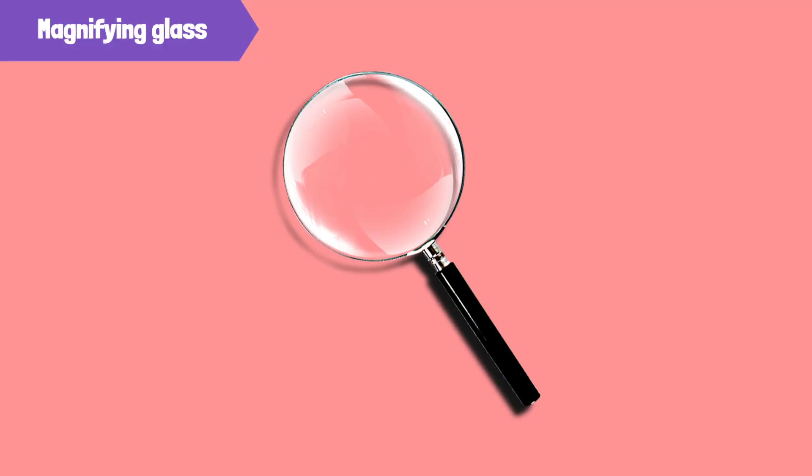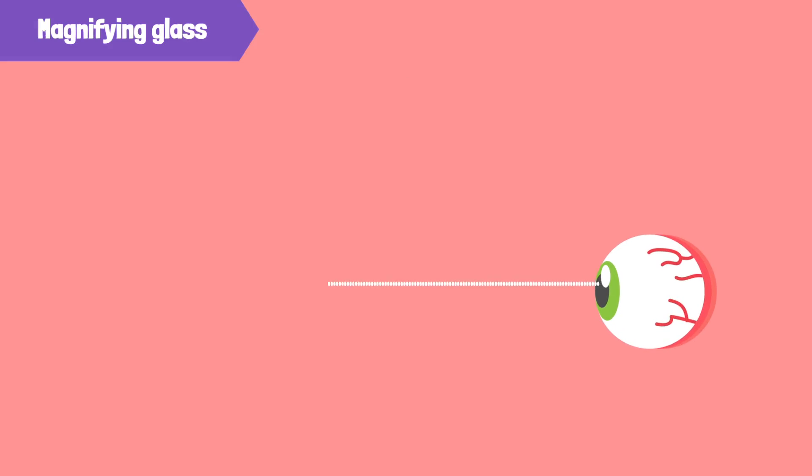For example, a magnifying glass. This simplest microscope of all is made from a single convex lens, a curved piece of glass that bends or refracts light rays passing through them, magnifying the object 5 to 10 times.